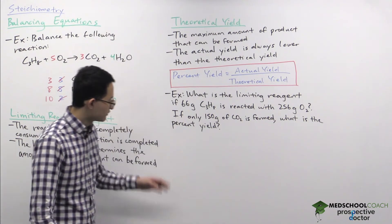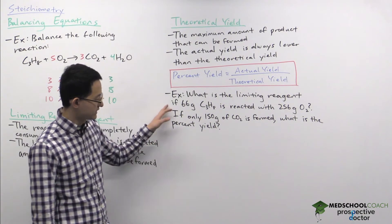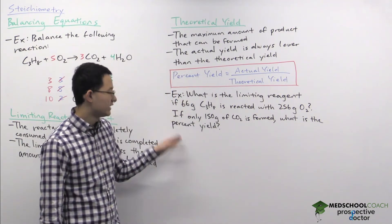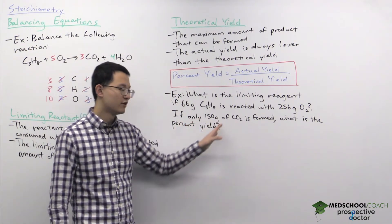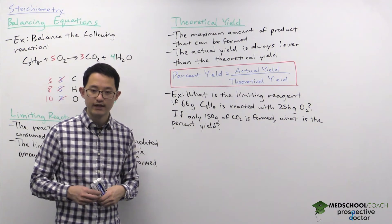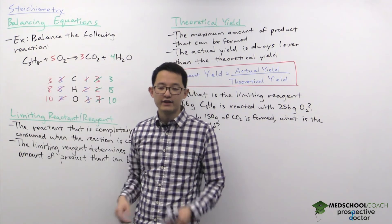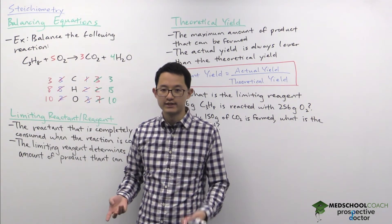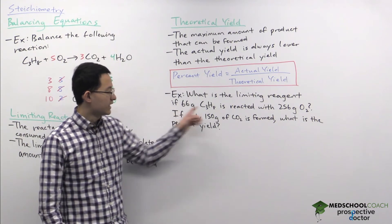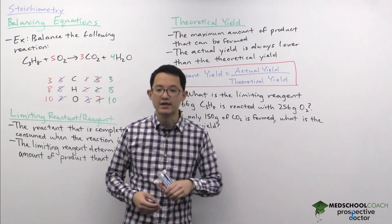To apply these concepts, let's look at this example question: What is the limiting reagent if 66 grams of propane is reacted with 256 grams of oxygen? And if only 150 grams of carbon dioxide is formed, what is the percent yield? To determine the limiting reagent, you need to figure out which reactant you'll run out of first given the one-to-five molar ratio. Since these ratios are based on moles, not grams, the first step is to convert the grams of propane and oxygen to moles.